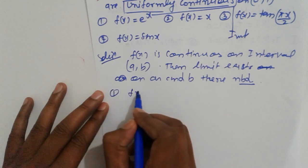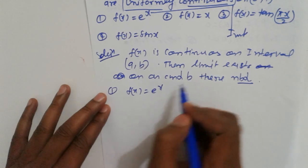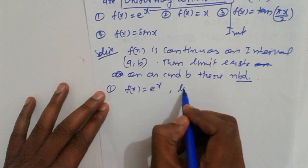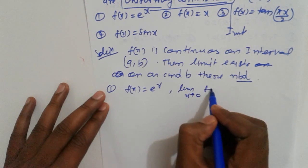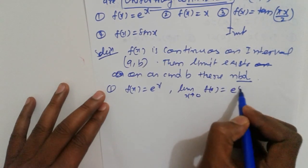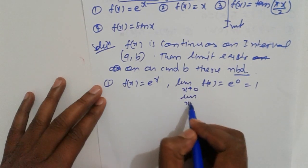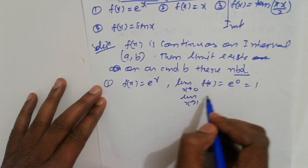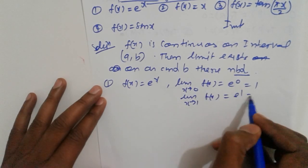First option: f(x) = e^x. Check the limits. Limit as x tends to 0: f(x) = e^0 = 1. Limit as x tends to 1: f(x) = e^1 = e, which also exists.